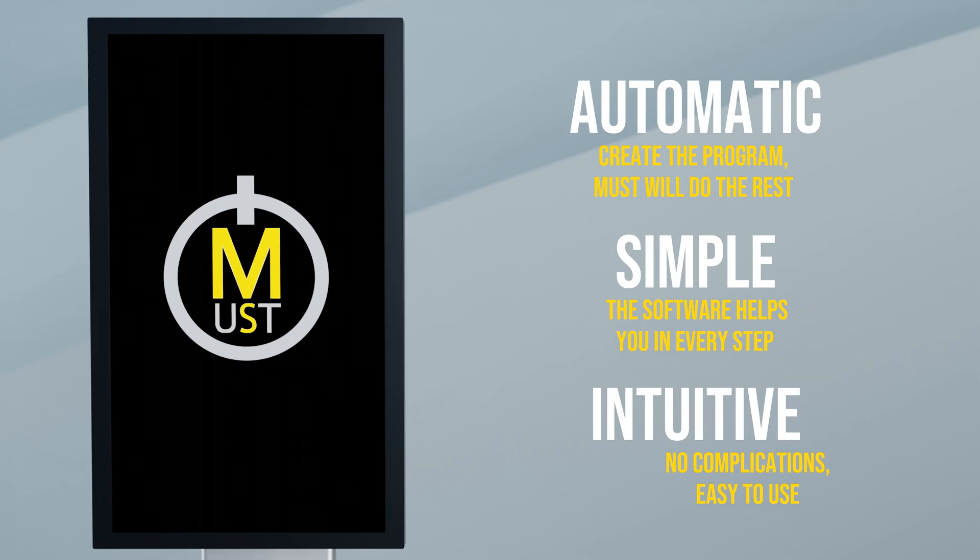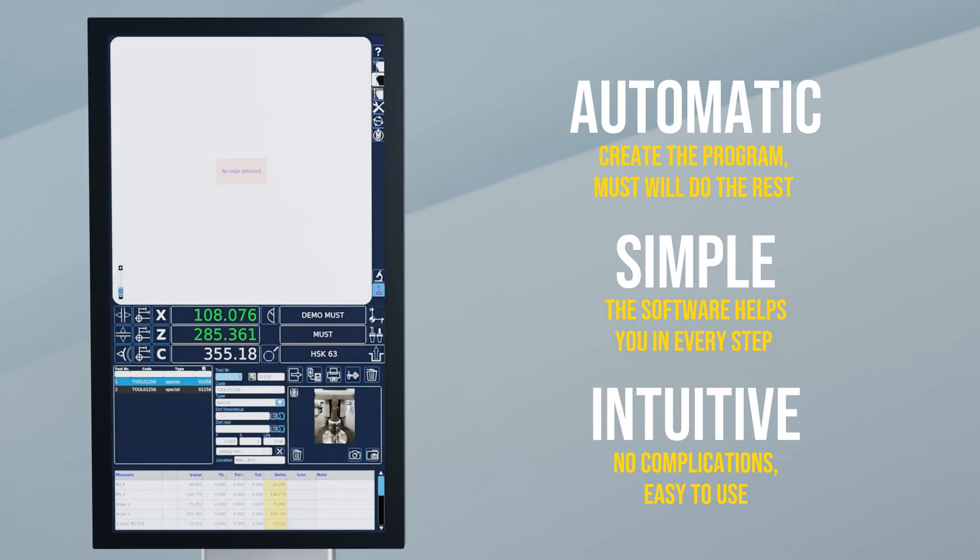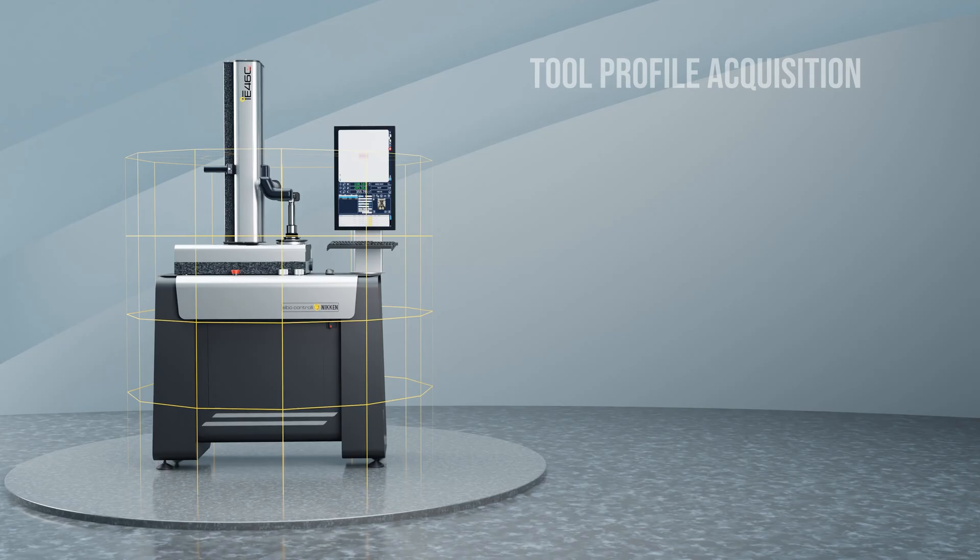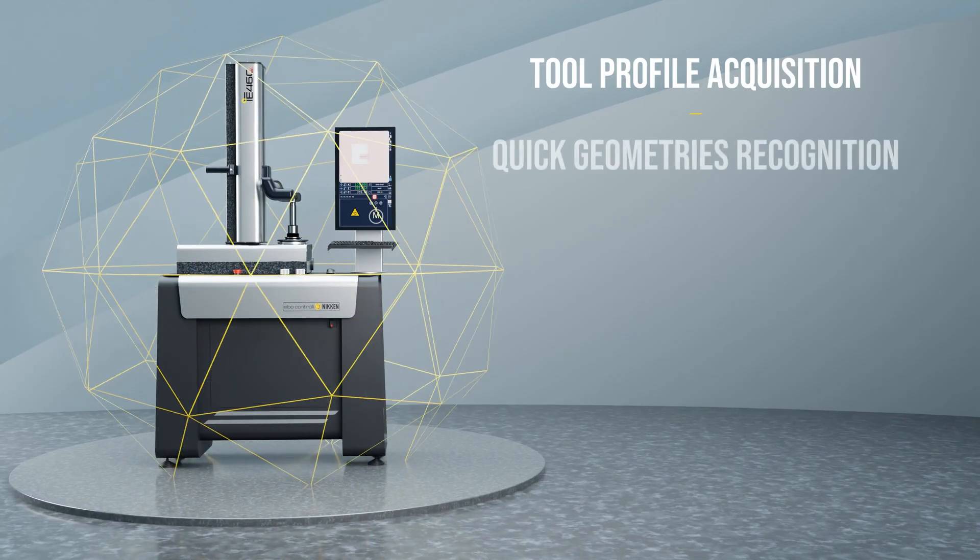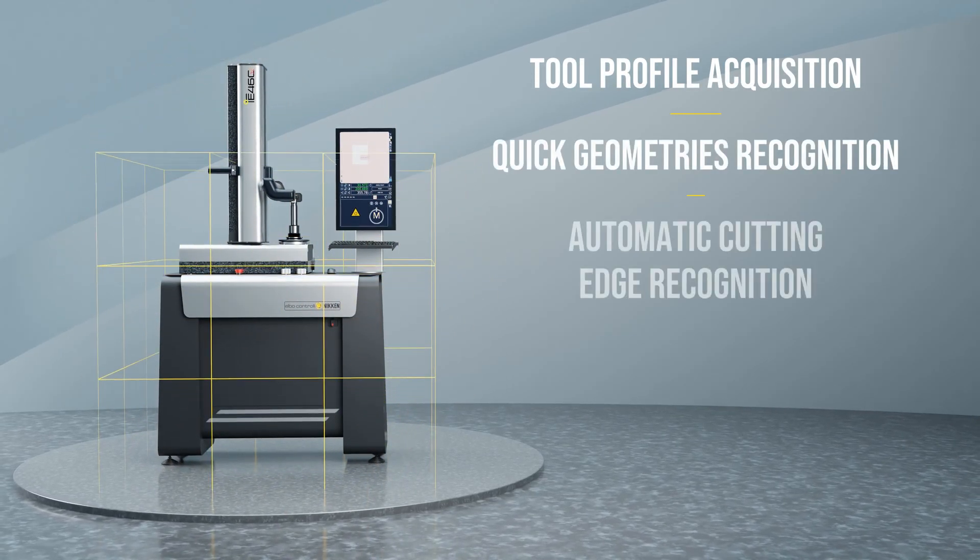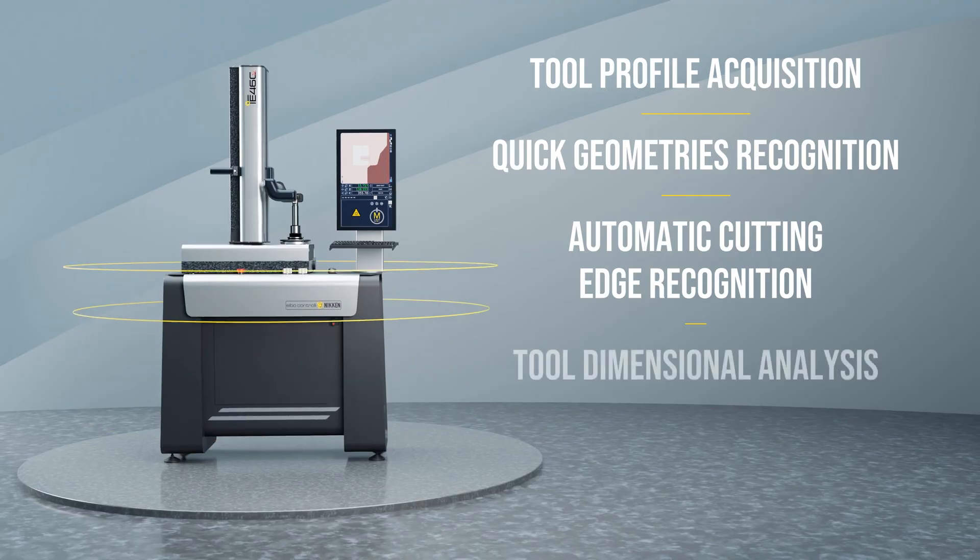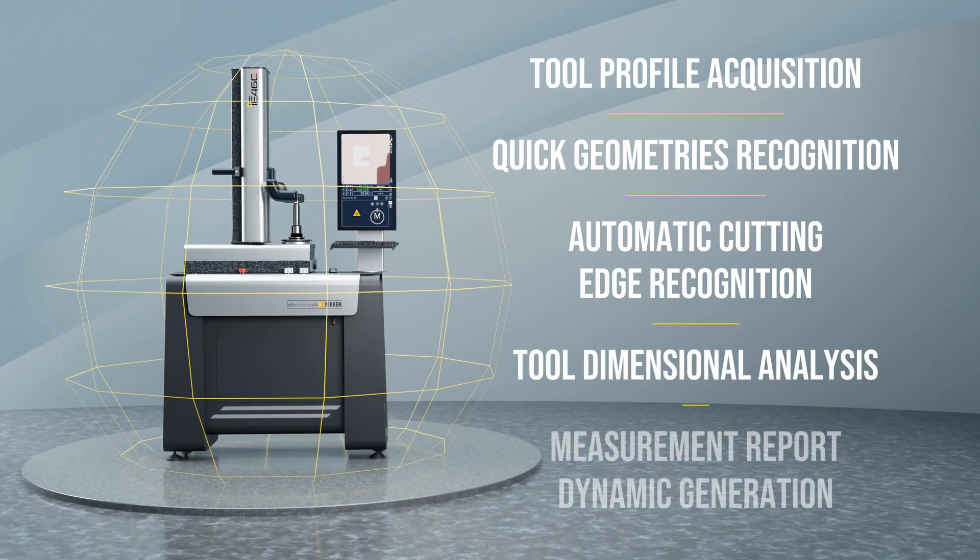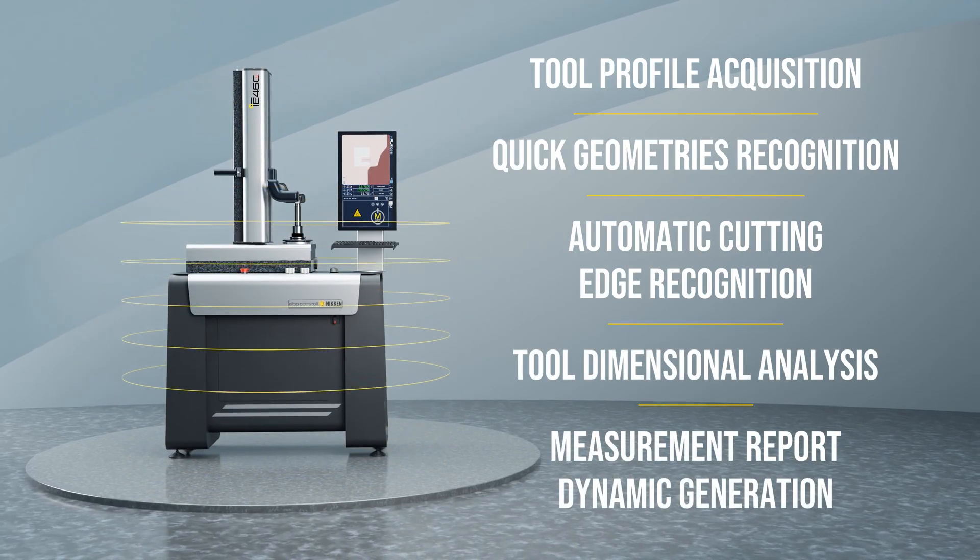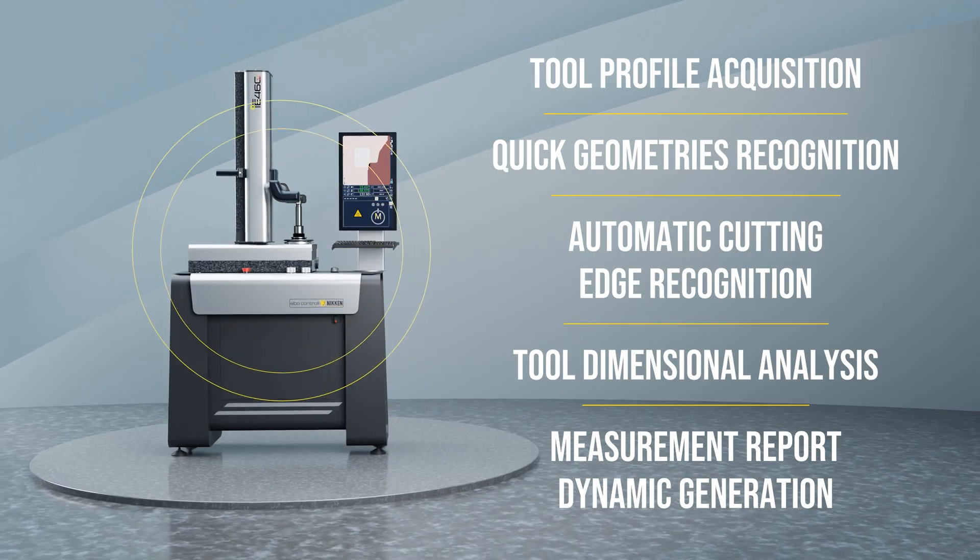The E46CX presetter is the maximum expression of Elbo Controlli Niken technology. The new measuring concept makes the measurement on this machine fully automatic. In fact, once programmed, the E46CX is able to autonomously carry out what has been requested.